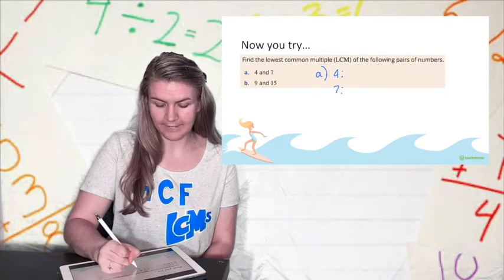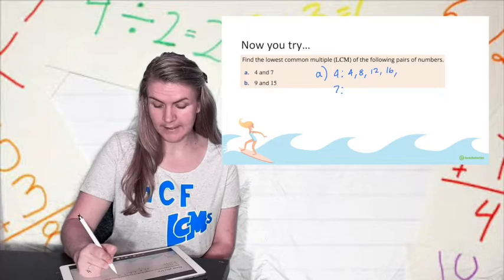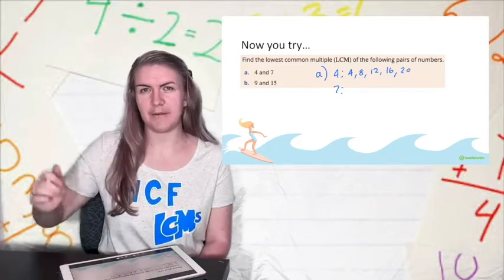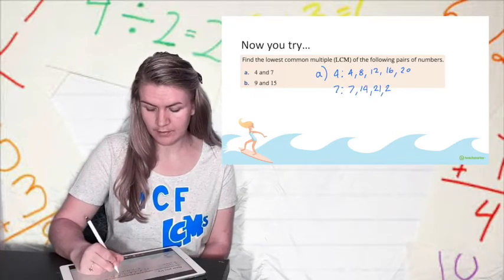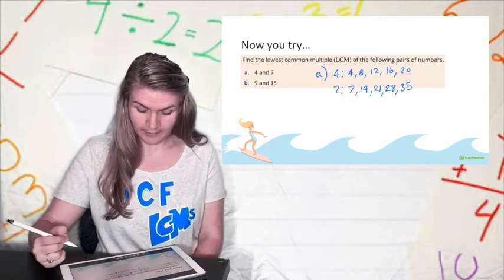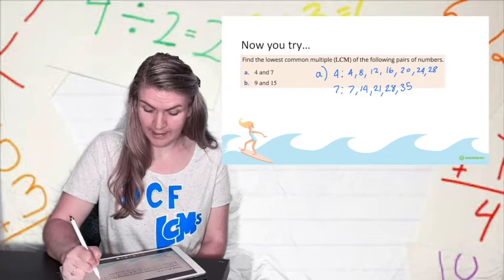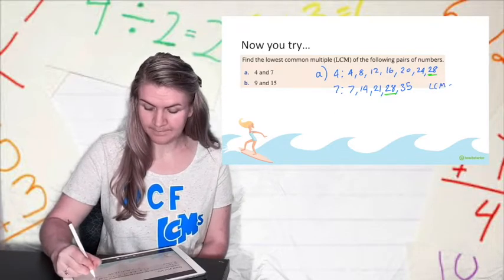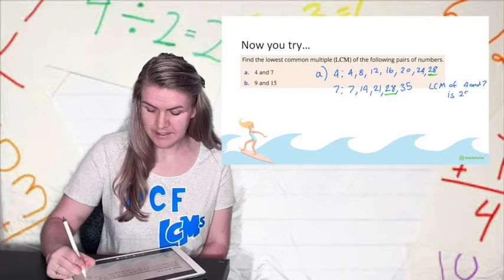So A. 4 and 7. So we've got 4, 8, 12, 16, 20. If you struggle with counting, you should practice that a bit, if you're counting up in your numbers. 7, 14, 21, 28, 35. None. So I'm going to have to go up with my 4s. 24, still none. 28. There we go. Hit it. 28. So the LCM of 4 and 7 is 28.